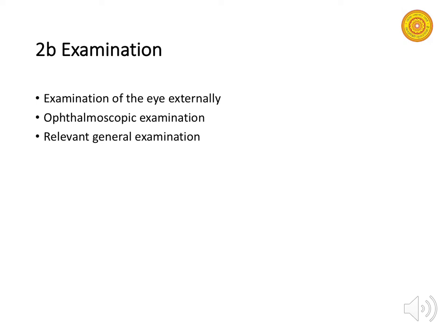In the examination, check visual acuity, color vision, and visual fields. Examine the eye externally and ophthalmoscopically using the ophthalmoscope — be very confident when using it, as it will be tested in clinical examinations. You should also be able to perform a relevant focused general examination depending on the findings from the specific eye examination.